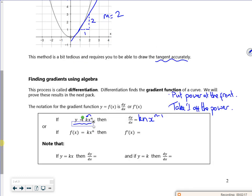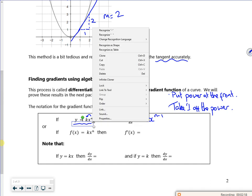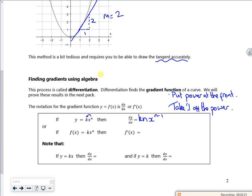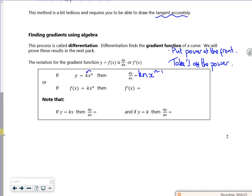There's different notations for it. You could have y, which goes to dy by dx, or you could have f of x, which goes to f dash of x. It's not one or anything like that, it's a dash. So my f dash of x is kn, x to the n minus 1.